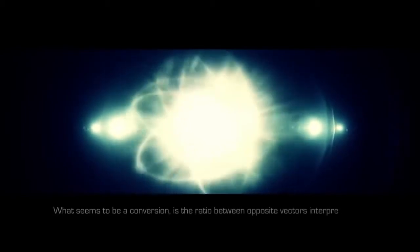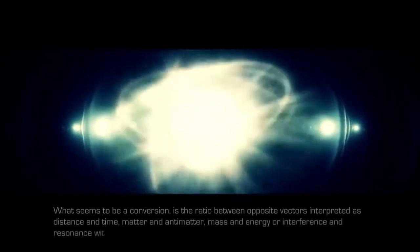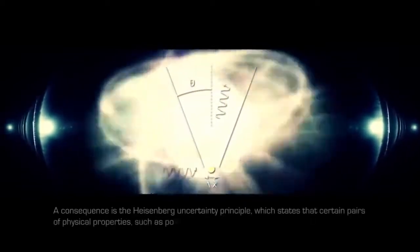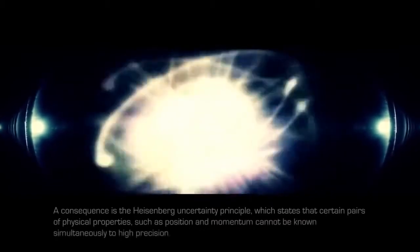Experiments show how conversion of matter into energy through its antimatter brings about gamma rays with exact opposite momentum. What seems to be a conversion is the ratio between opposite vectors interpreted as distance and time, matter and antimatter, mass and energy or interference and resonance within the abstract arrow of time of C. The sum of opposite vectors is always zero. This is the reason for the symmetry or conservation laws in physics. A consequence is the Heisenberg uncertainty principle, which states that certain pairs of physical properties, such as position and momentum, cannot be known simultaneously to high precision. In a sense, a single particle is its own field.